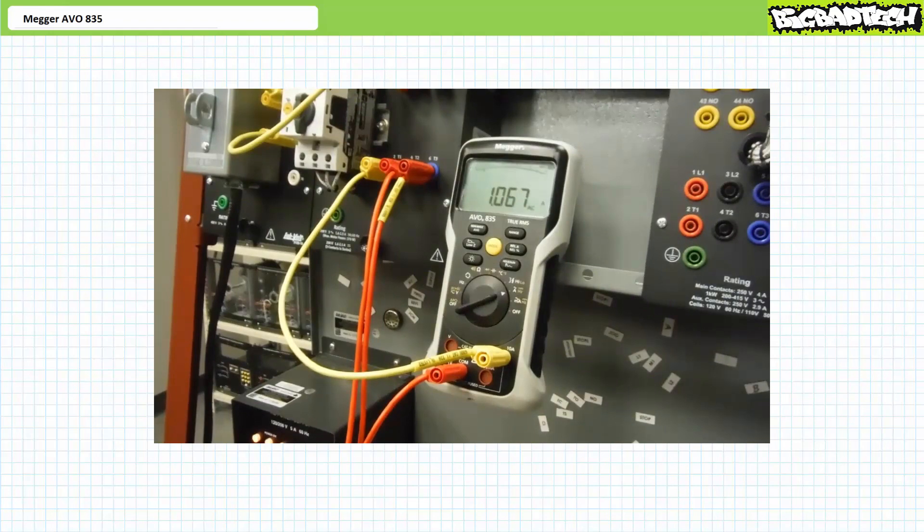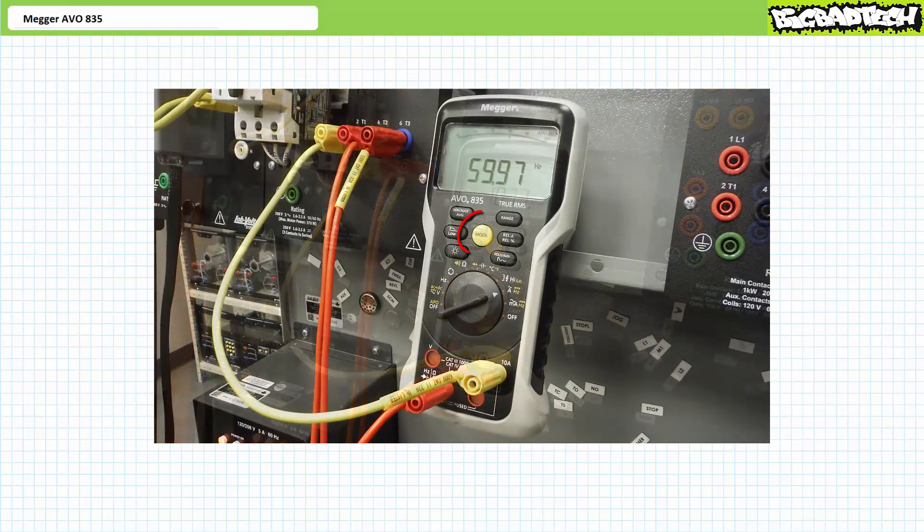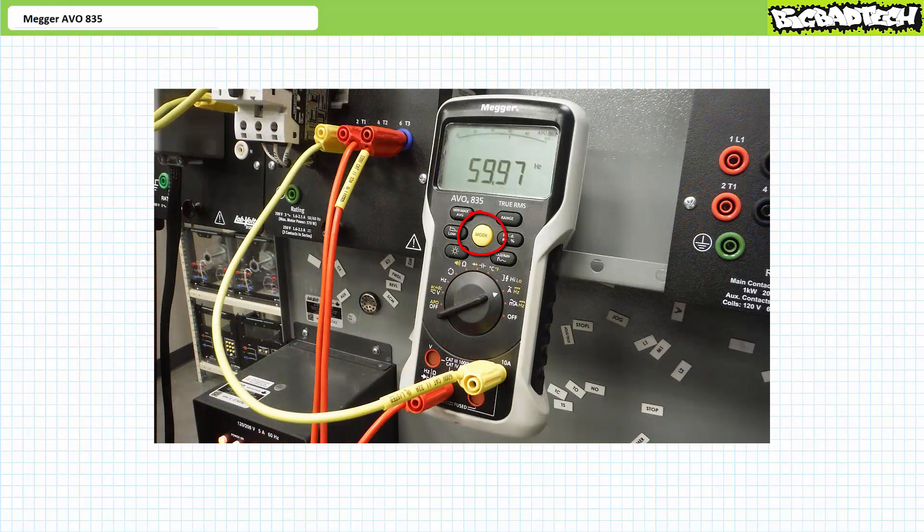While we're here, let's check the current frequency. Press the center yellow mode button twice to change the DMM to current frequency measurement function. Using the up to 100 hertz range, we observe roughly 60 hertz.